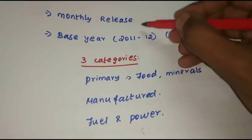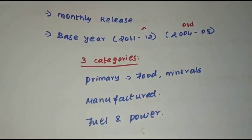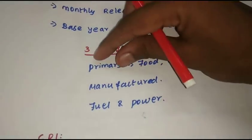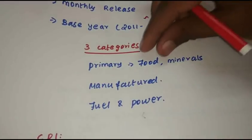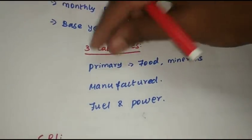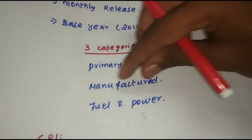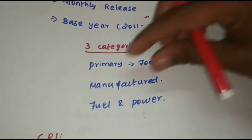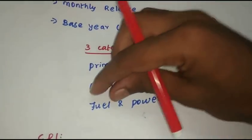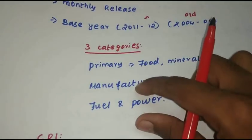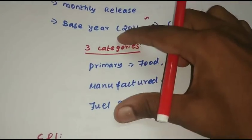The current base year is 2011-12. This is a questionnaire, so you can get a full list. Let's get three categories: one is primary — primary includes food products and minerals. The second is the manufactured area. The third is fuel and power — that includes diesel and petroleum products. These are the three categories for WPI.